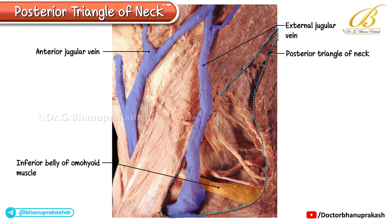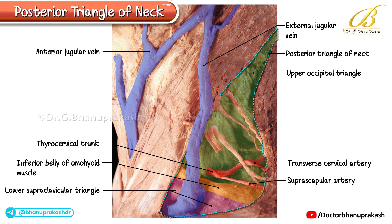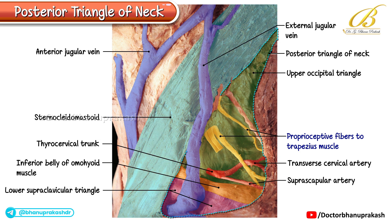The inferior belly of the omohyoid muscle is clearly visible, dividing the posterior triangle into the upper occipital triangle and the lower supraclavicular triangle. In the lower part of the occipital triangle, above the inferior belly of the omohyoid, we can see the thyrocervical trunk. This artery runs laterally for a short distance and then divides into the upper transverse cervical artery and the lower suprascapular artery. Proprioceptive fibers to the trapezius muscle can be seen crossing the transverse cervical artery near the posterior border of the sternocleidomastoid.